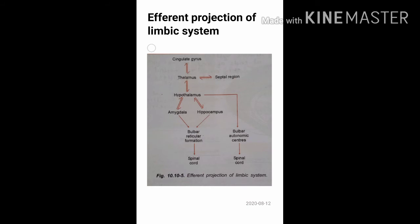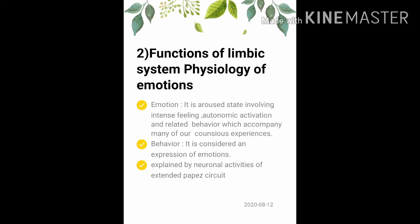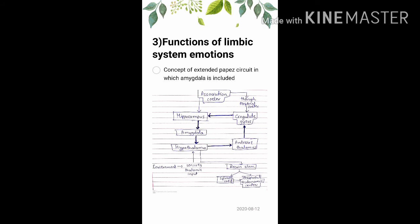The functions of the limbic system include: physiology of emotions, motivational behavior, autonomic functions, feeding behavior regulation, sexual and reproduction behavior, and maternal behavior. Emotion is defined as an aroused state involving intense feeling, autonomic activation, and related behavior accompanying many of our conscious experiences. The physiology of emotions can be explained by the neuronal activities of the external Papez circuit.